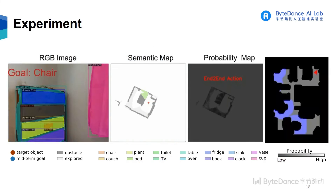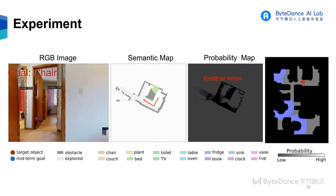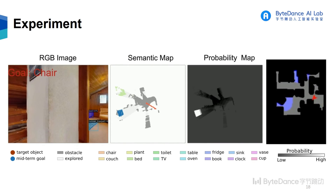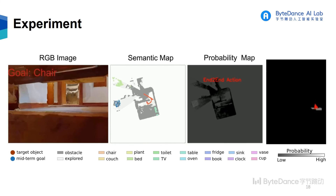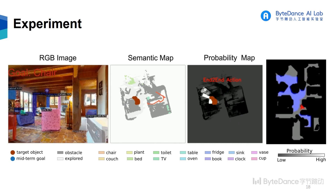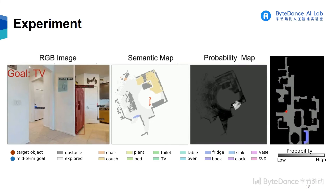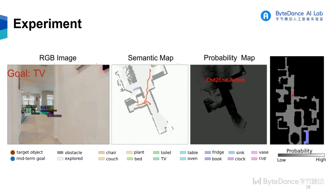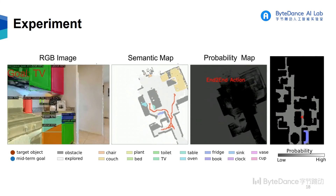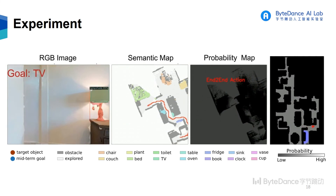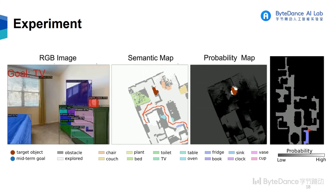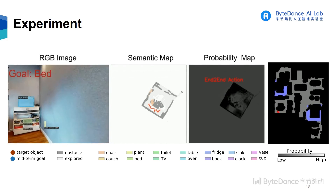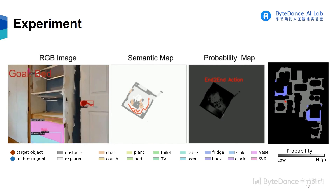The qualitative result demonstrates how our method works. The agent first explores the environment using the end-to-end branch. Once it detects a potential target object or related object, it switches to the map-based method, which guides the robot to approach that area and check. If it cannot find the target object, the probability in that area will decrease. Then the agent switches back to the end-to-end branch and continues exploration. If the agent finds the target, it will go and stop at that object.